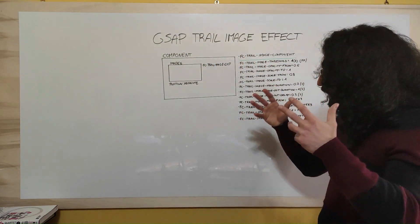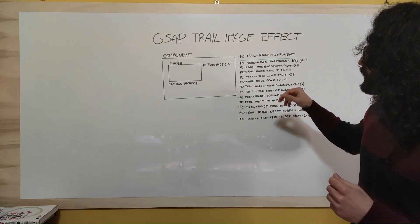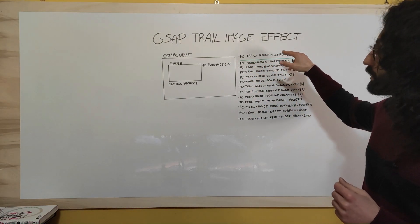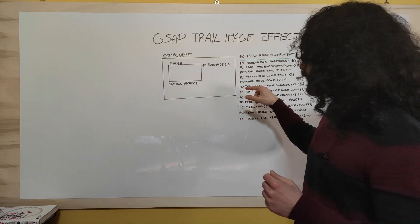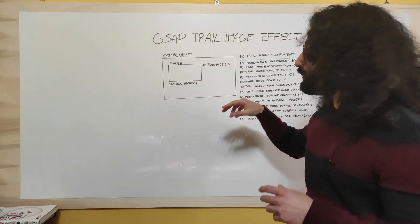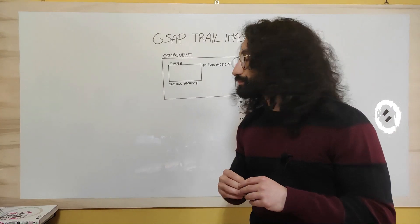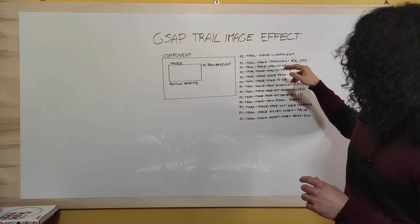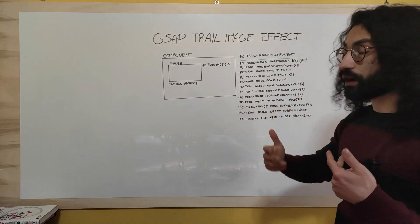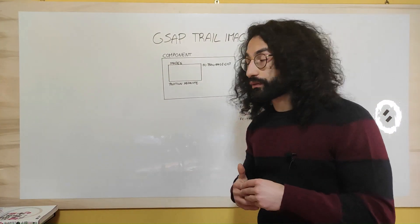Back to the attributes — the required attributes are just two. We need to set an fcTrailImage attribute with a value of 'component' onto our component, and then we need to set an fcTrailImage attribute with a value of 'list' onto our image wrapper. All the attributes listed below are just options — we can use those, or stick with default values.